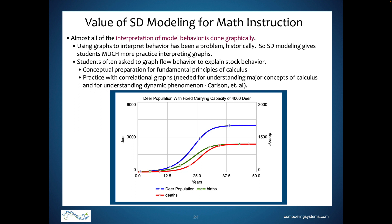Students and many adults are notoriously poor at reading and interpreting graphs. System dynamics modeling has, as one of its main analytical techniques, the interpretation of graphical output multiple times as models are built, modified, and tested — so students get lots of practice. Moreover, students are often required to view flow graphs on the same grid as stock graphs to help explain stock behavior. This correlational graphical analysis is a core concept in calculus and very important for understanding dynamic phenomena.